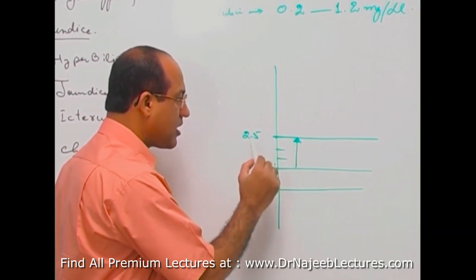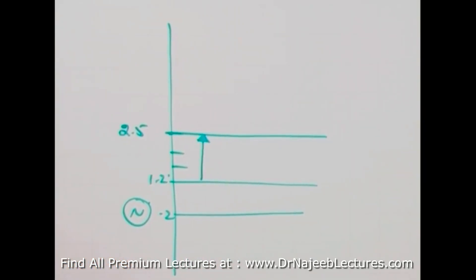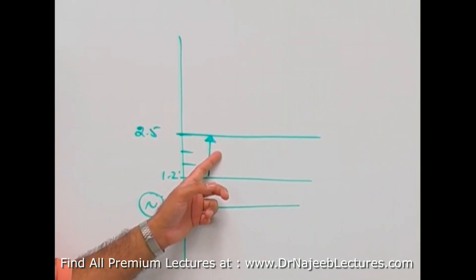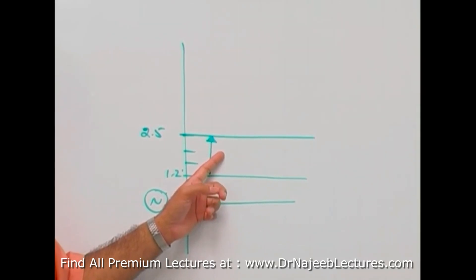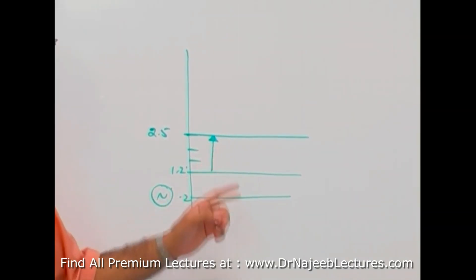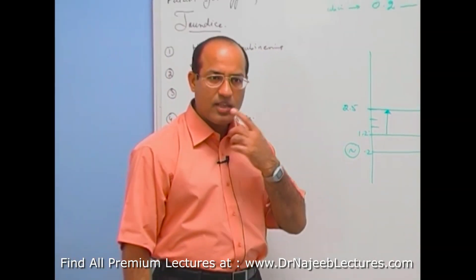When bilirubin level is going up, when it reaches around 2.5 milligram per dL, then what really happens is that observer can identify the presence of high bilirubin level. Is that right? And how the observer decides?